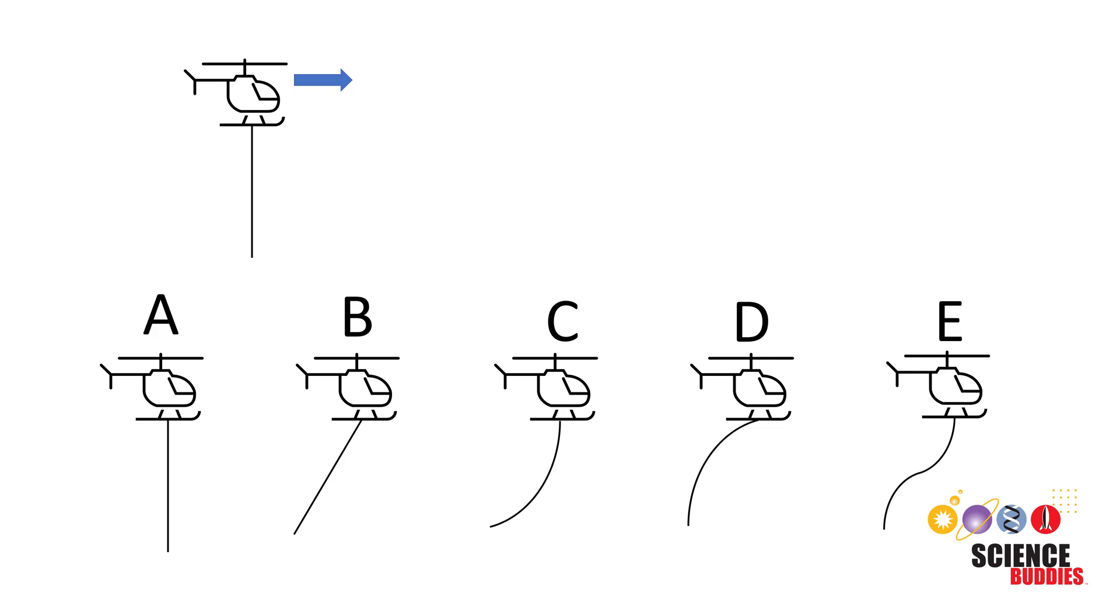Does the rope A hang straight down, B hang straight diagonally like this, C curve backward like this, D curve downward like this, or E make sort of an S shape like this?